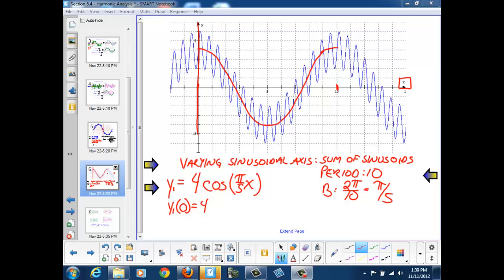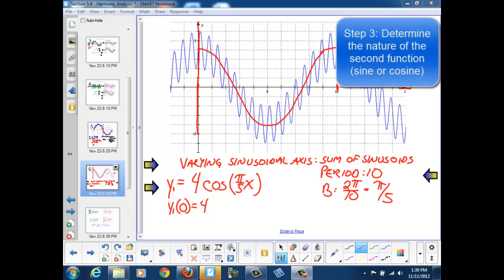So y1 of 0 is 4. If we check our actual function, the graph in blue, we see that on the y-axis, that function is equal to 4.